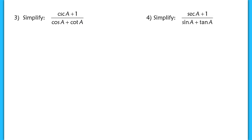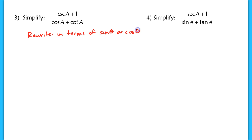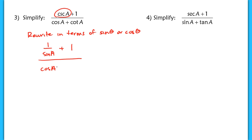Problems 3 and 4 also ask us to simplify, but with much more strategy involved. One strategy you'll use every time with trig expressions is to rewrite all trig functions in terms of sine or cosine. For example, cosecant of a becomes 1 over sine of a. Cosine of a stays as is. Cotangent of a, the reciprocal of tangent, becomes cosine over sine.